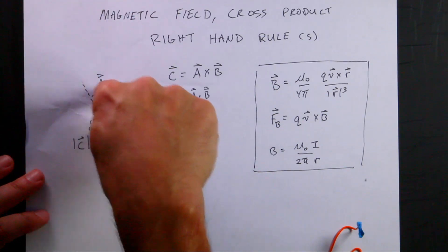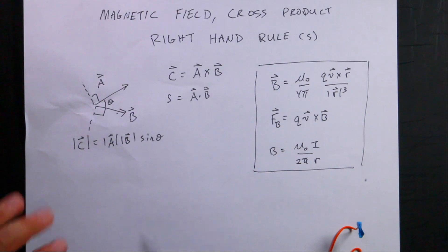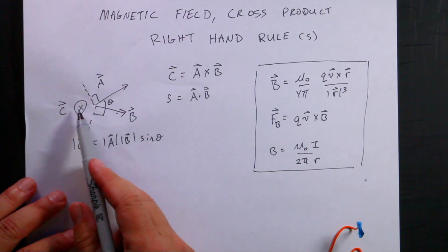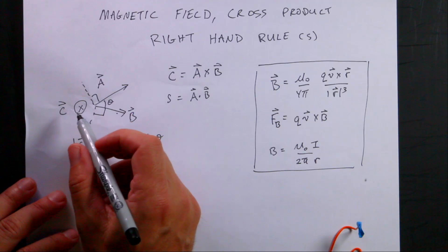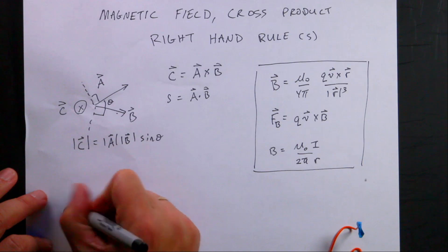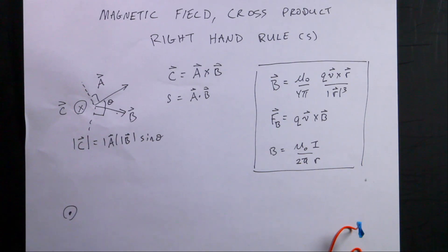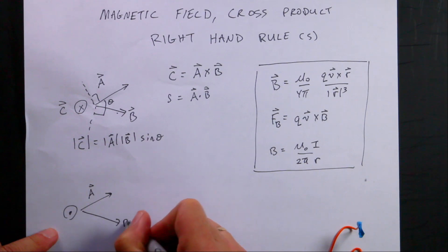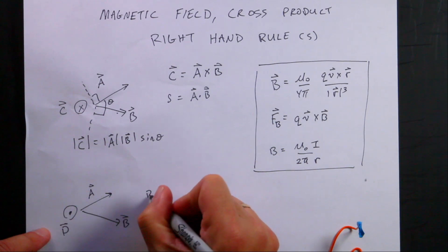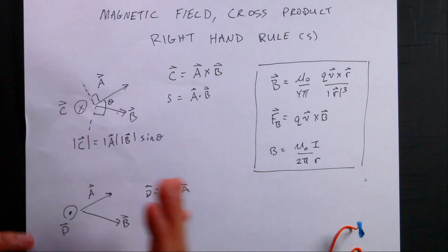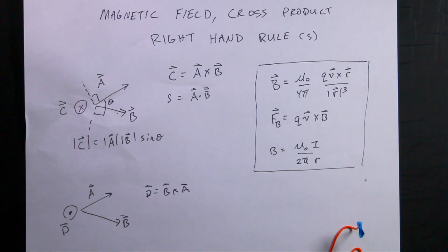So the answer is that a cross b is into the paper. We represent a vector going into the paper like this — think of it as an arrow, and you're looking at the feathers at the back. A vector coming out of the page is represented with a dot — you're seeing the point of the arrow. So with the same vectors a and b, d equals b cross a is in the opposite direction.